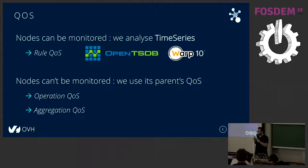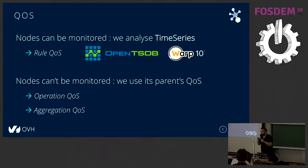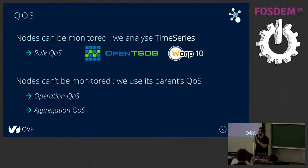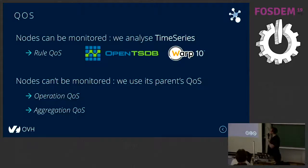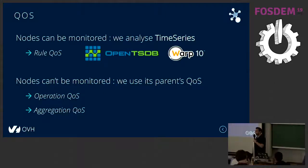The other case is when a node cannot be monitored. For example, a website cannot be monitored by a probe checking the HTTP status code, because we cannot guarantee the code — the user itself may raise an error. In this case, we don't use time series data, but use its own parent's QoS to build its QoS. This is when we use the operation QoS and aggregation QoS.